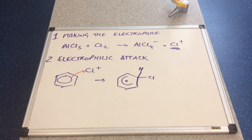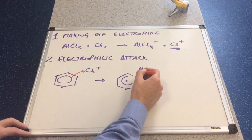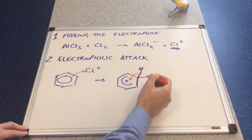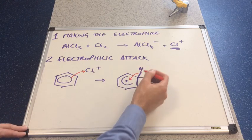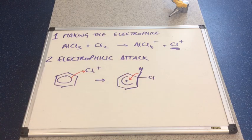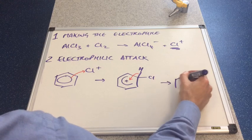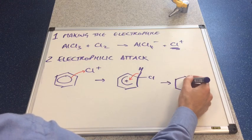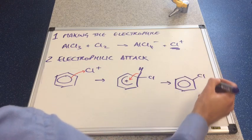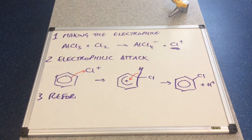It's not very stable. It doesn't hang around for long because it wants to become stable. How does it do that? A pair of electrons from this carbon-hydrogen bond go back in and re-establish the full pi electron cloud. Then obviously the H comes off as H+.